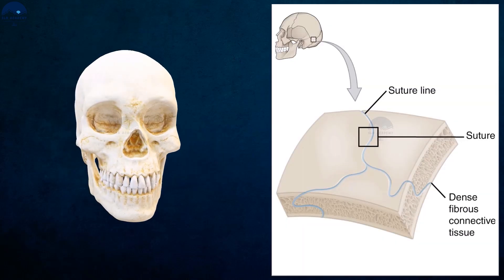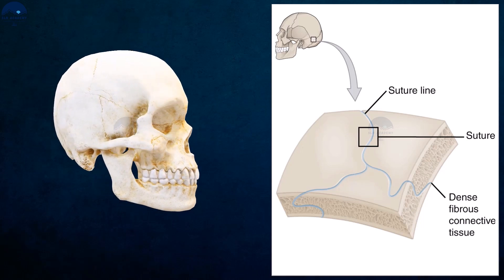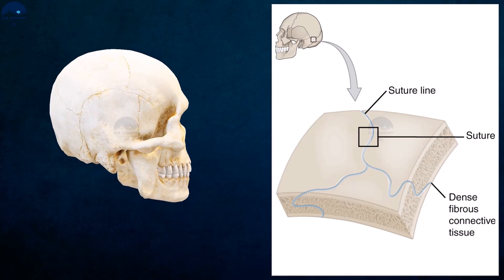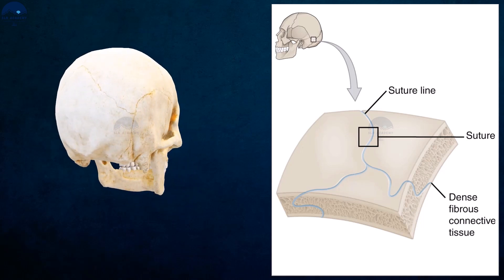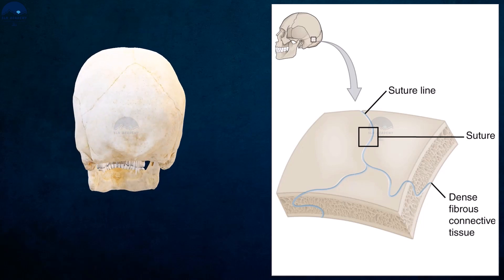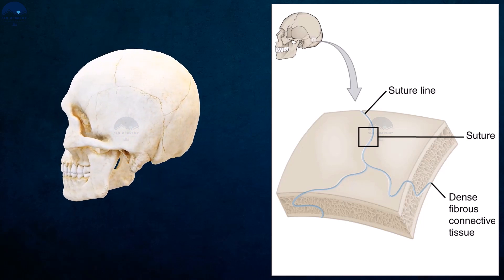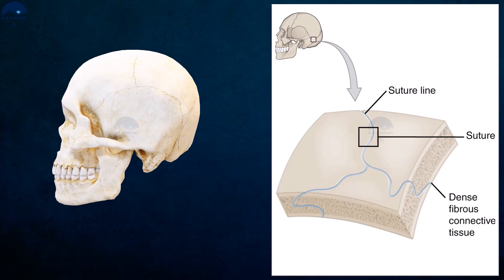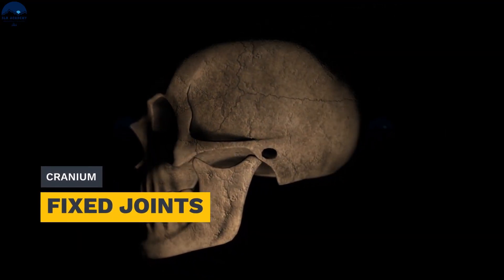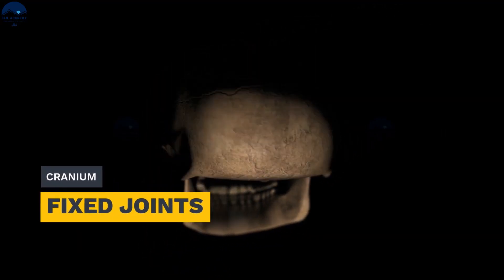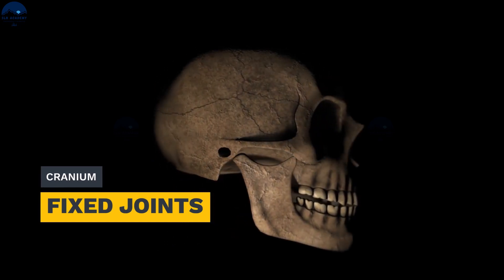Fibrous joints are fixed joints. These joints do not allow any movement, so these are also called immovable joints. The edges of two flat bones at this joint are tightly interlocked. For example, most of the bones of the skull, i.e., the cranium.